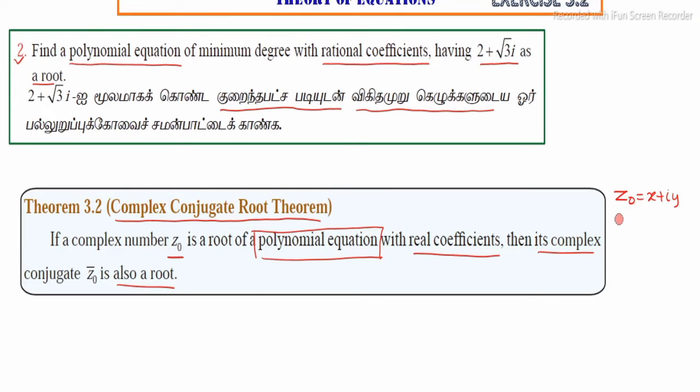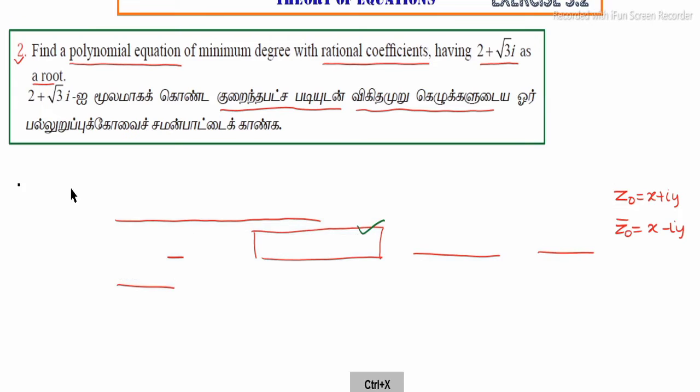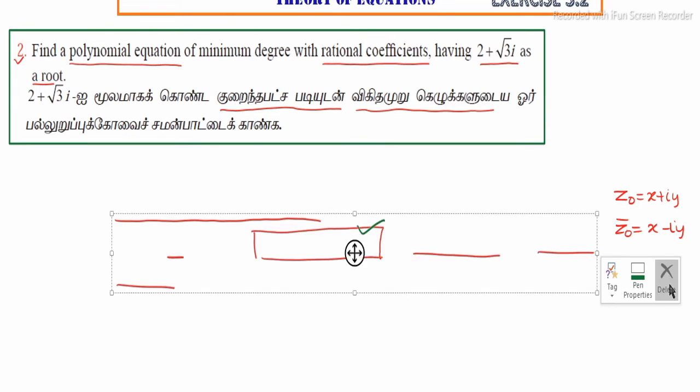The complex conjugate of Z₀ is Z₀ bar, that is X minus IY. This is also a root of the same polynomial equation. From this theorem, we understand this.